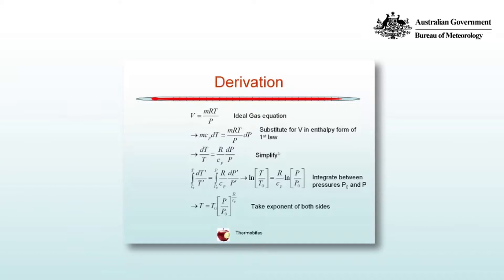We can then integrate both sides of the equation, introducing the dummy variables of integration, indicated by the dashes throughout. And we integrate between a reference level, p0 where the temperature is t0 and some arbitrary pressure p where the temperature is t. Both sides produce a natural logarithm and so we obtain log of t on t0 is equal to r on cp log of p on p0.